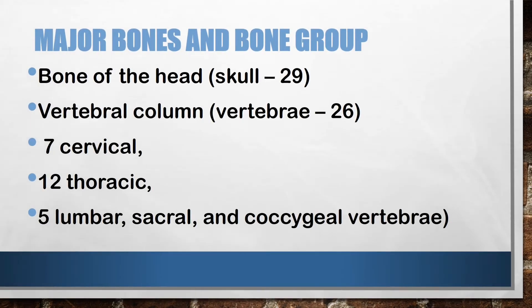The major bones and bone groups are composed of the following. First, the bone of the head — that is the skull, equaling 29 parts. The vertebral column — that is the vertebrae, with 26 parts. The seven cervical parts are also indicated, the twelfth thoracic, the five lumbar, sacral, and coccygeal vertebrae.